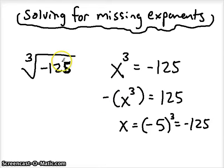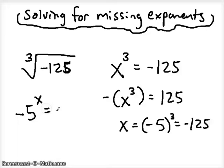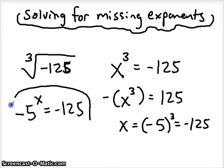So today we're going to be focused on basically this type of problem: negative 5 to what power is negative 125. So this is what our problems will look like today. We're going to be solving for missing exponents. I'm going to show you a little trick for how to do that.